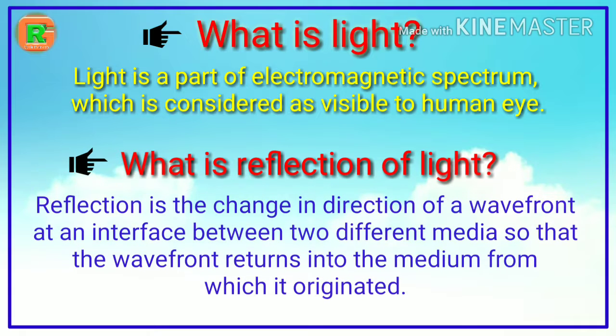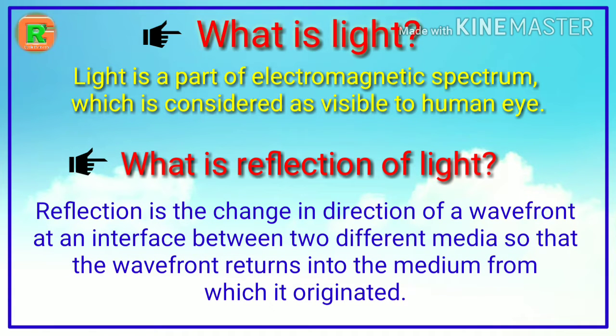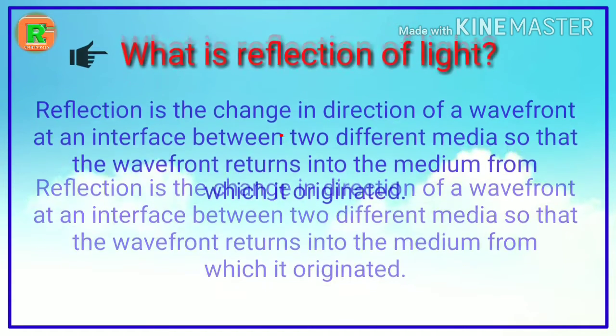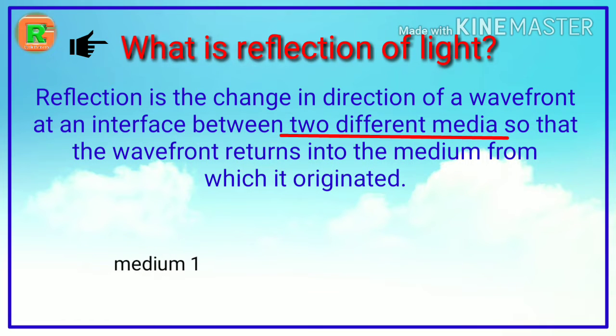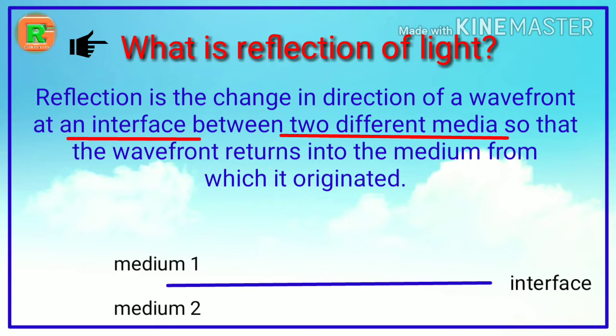What is reflection of light? Reflection is the change in direction of a wavefront at an interface between two different media so that the wavefront returns into the medium from which it originated. Let us understand this definition. Two different media - let us take medium 1 and medium 2. And this is the interface between two media. Now, reflection of the light is change the direction at interface and return to the same medium.